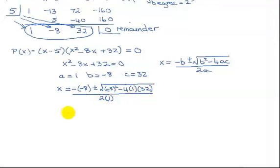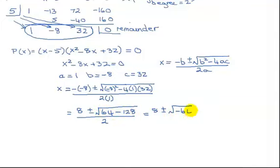So I get 8 plus or minus the square root of 64 minus 4 times 32 is 128, all divided by 2.